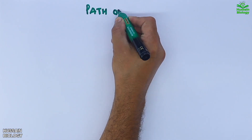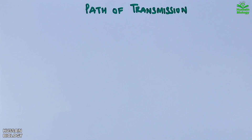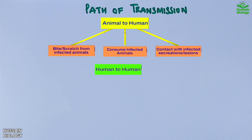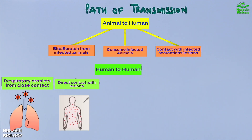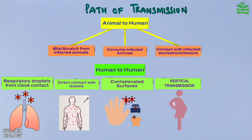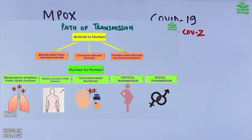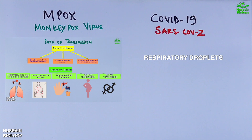Mpox transmits via animal to human or human to human contact. We can see in the diagram different modes of transmission: direct contact with an infected person or animal, vertical transmission, and sexual transmission. COVID-19 primarily transmits via respiratory droplets produced when an infected person coughs, sneezes, talks, or breathes.